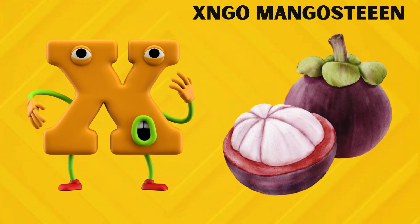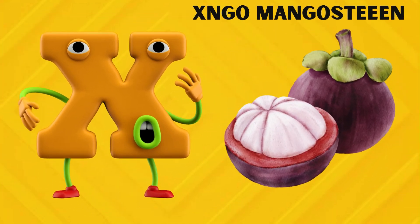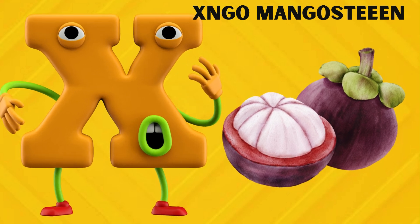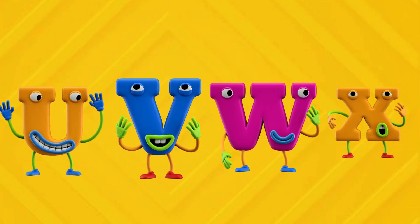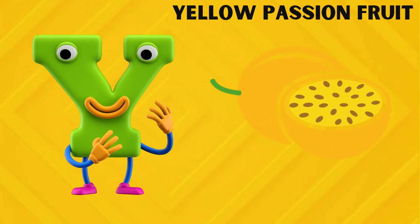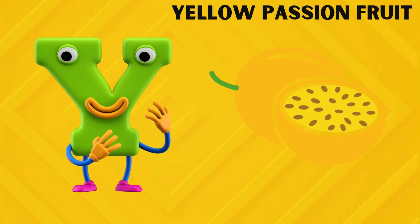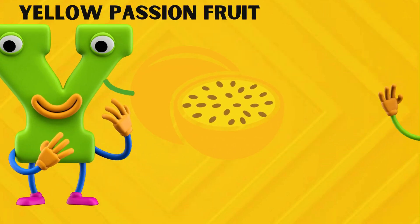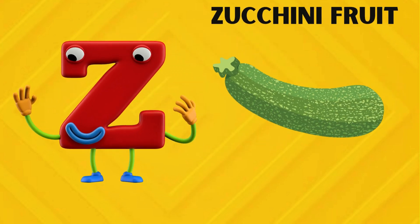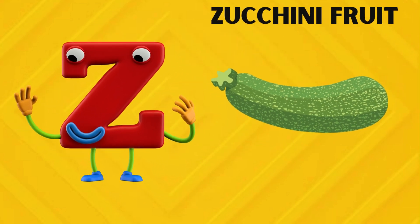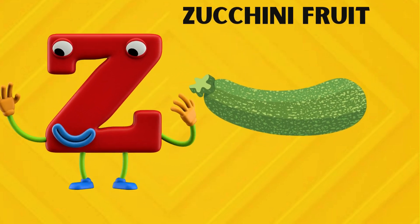X is for Exangomangostine. X. Exangomangostine. Y is for Yellow Passion Fruit. Y. Yellow Passion Fruit. Z is for Zucchini Fruit. Z. Zucchini Fruit.